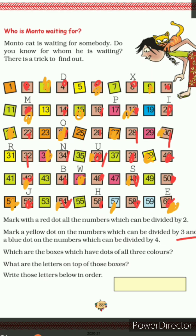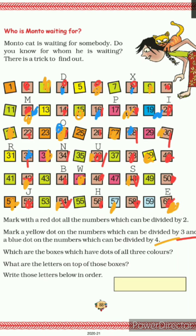Now mark a blue dot on numbers which can be divided by 4. These are the 4-times table numbers: 4, 8, 12, 16, 20, 24, 28, 32, 36, 40, 44, 48, 52, 56, and 60. Mark all of these with a blue dot in your book.